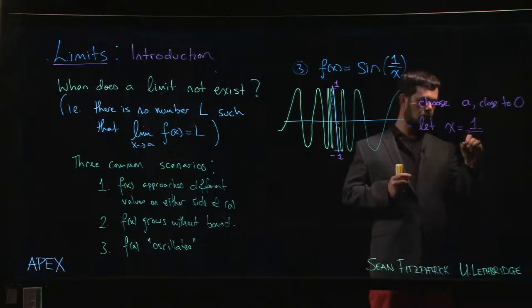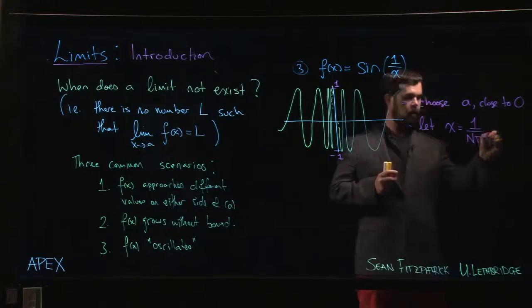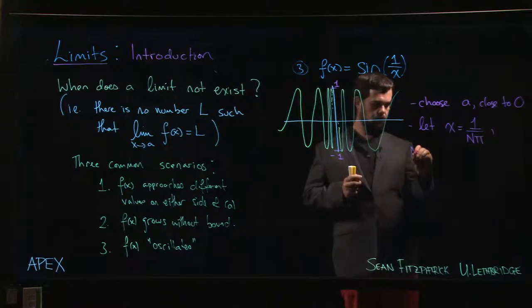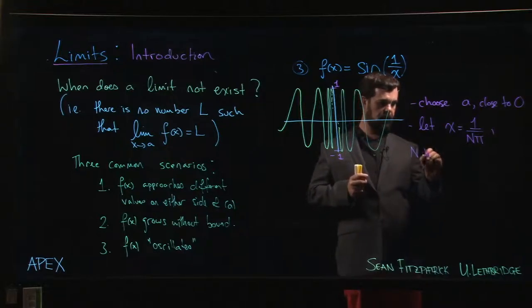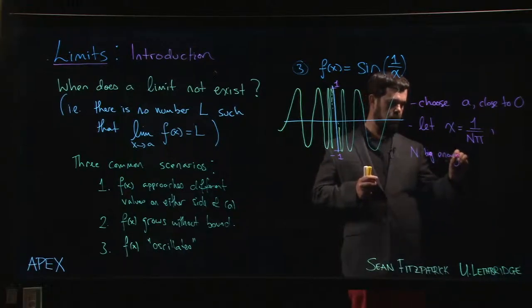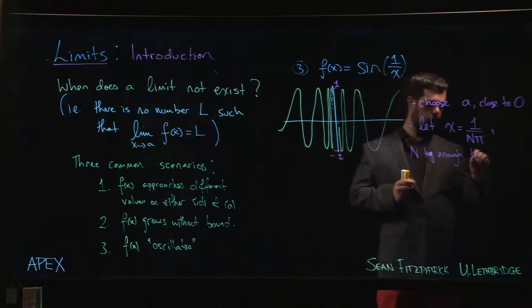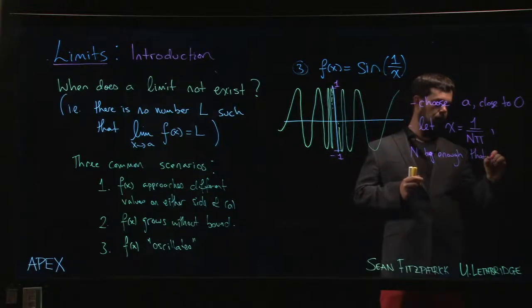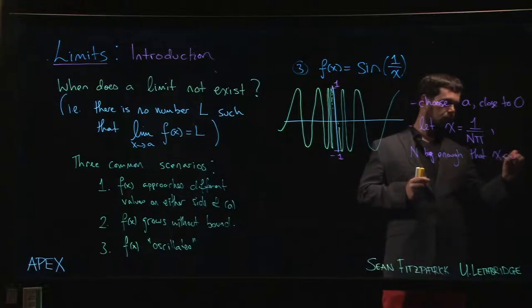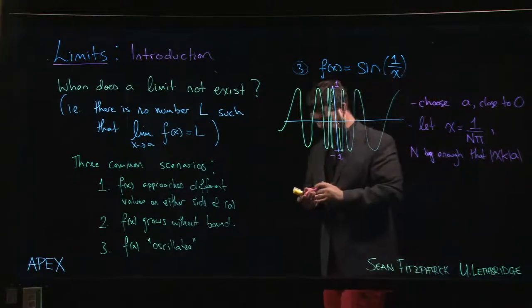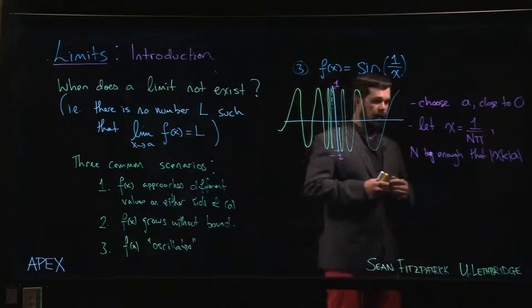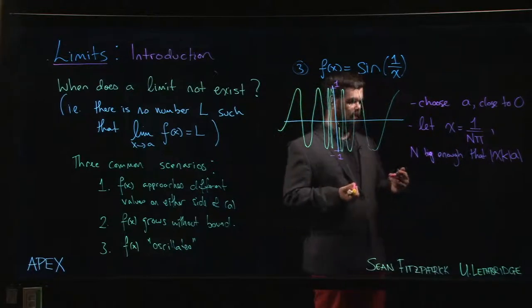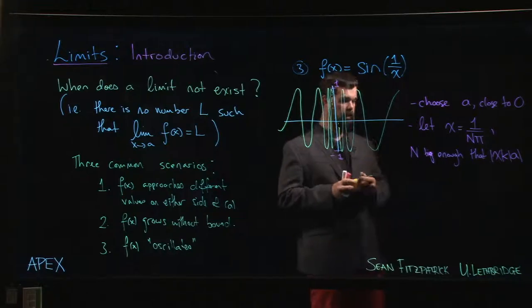Where we choose n big enough that x is less than a in absolute value. You can choose a sufficiently large n and you find when you plug it in that f of this x is going to be sine of one over one over n times pi.